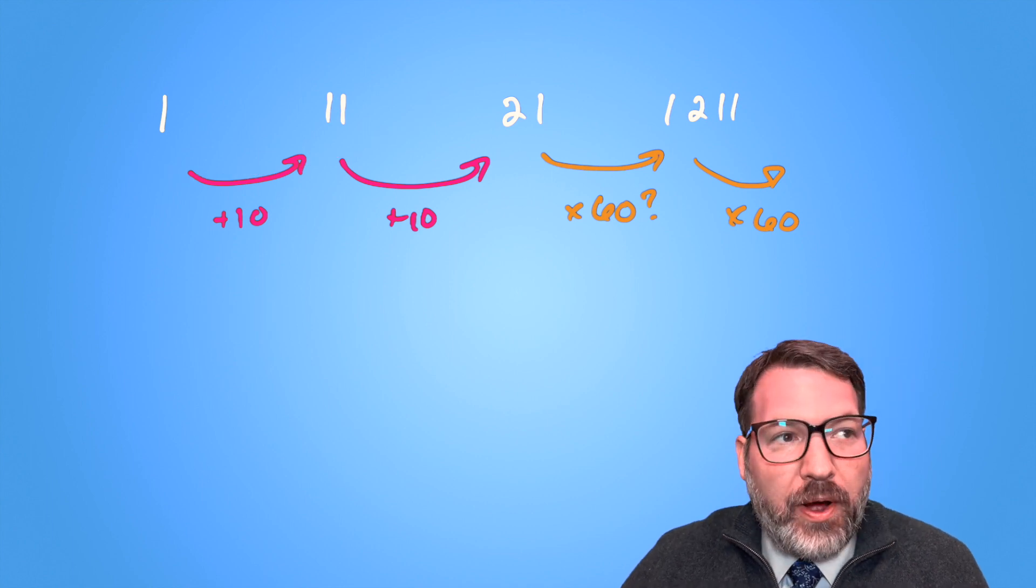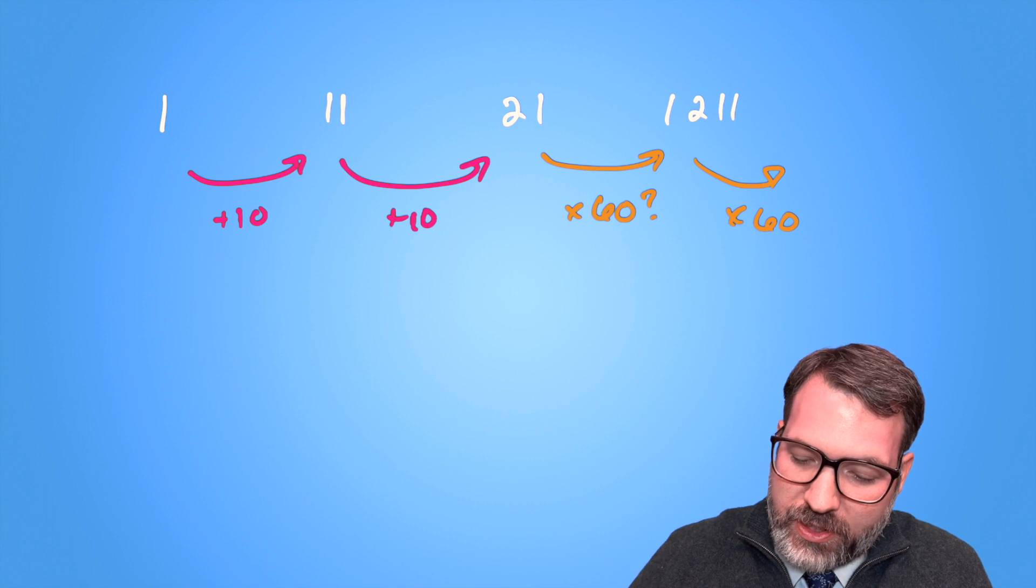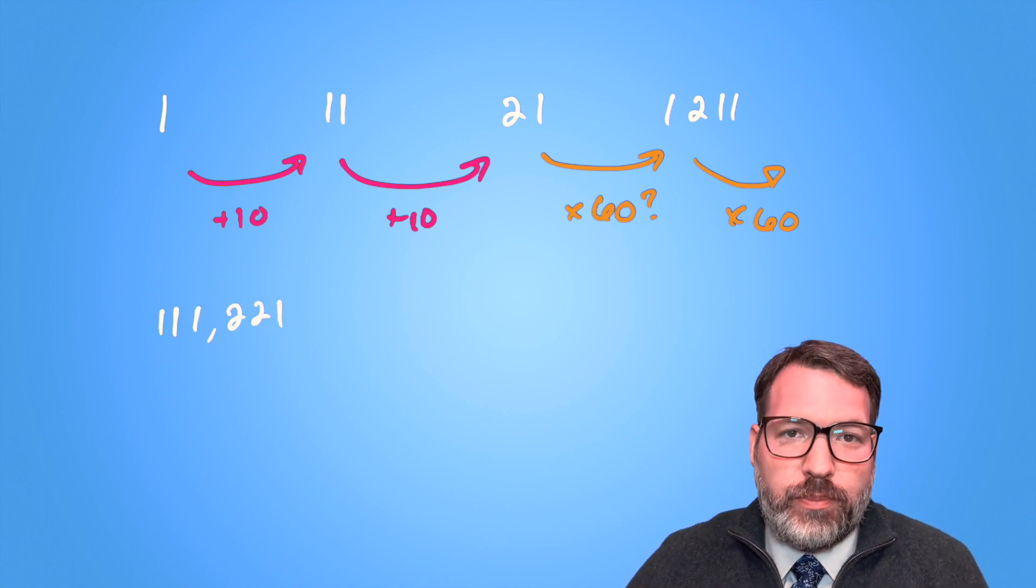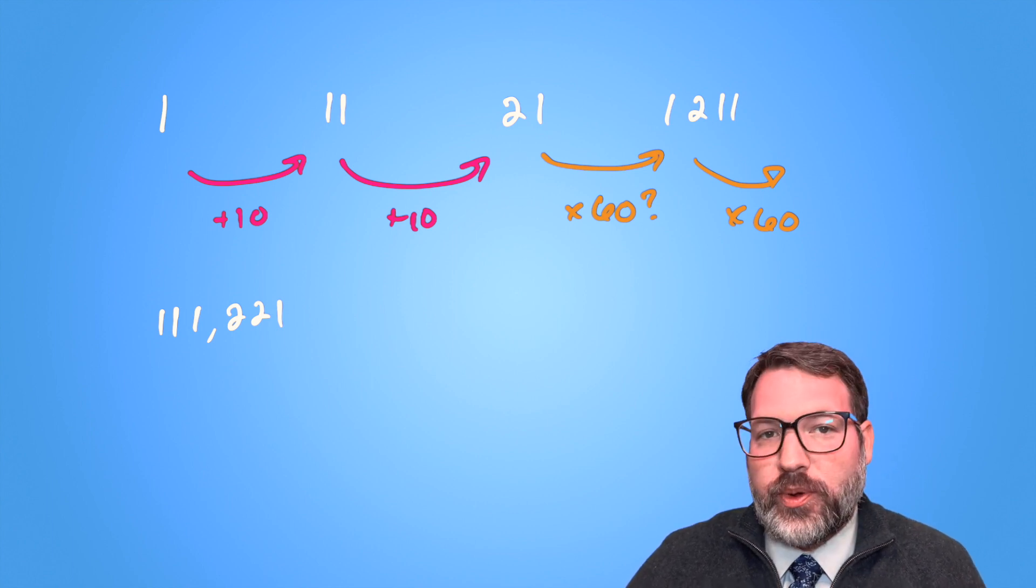But even so, it turns out that roughly 72,000 is not the next term in this sequence. Instead, the next term in this sequence is 111,221, meaning we're now growing by a factor of roughly 100, even faster than we were a moment ago.